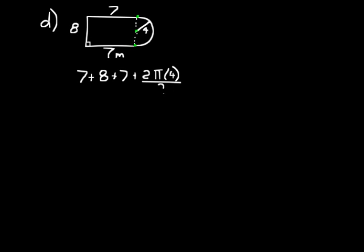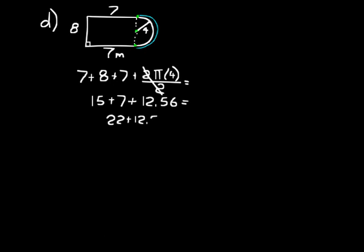Since it's half a circle, we divide by 2, so the twos cancel and we get pi times 4. Adding in pairs: 7 plus 8 is 15, plus 7 plus pi times 4 — that equals 12.56. So 15 plus 7 is 22, plus 12.56 equals 34.56 meters. Always remember to put the units on your answer.